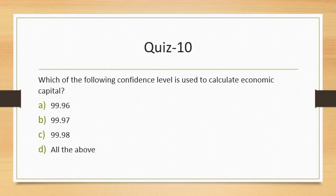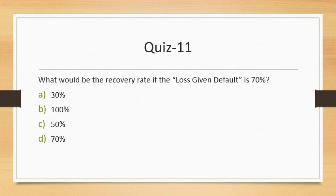Question 10: Which confidence level is used to calculate economic capital? While 99% is a generic estimate, more precise values such as 99.96%, 99.97%, and 99.98% are all considered. The answer is all of the above. We never calculate it at 100%. Question 11: What is the recovery rate if loss given default is 70%? Recovery rate is the opposite of LGD — if LGD is 70%, recovery rate is 30%, as the two must sum to 100%.